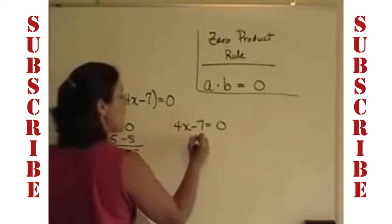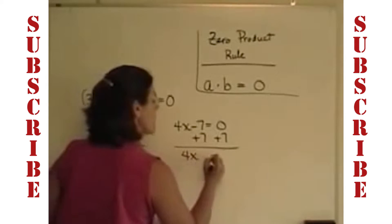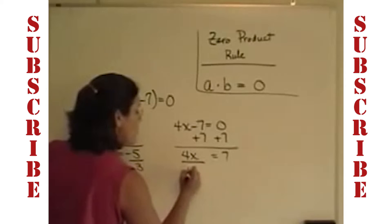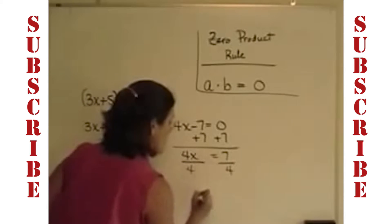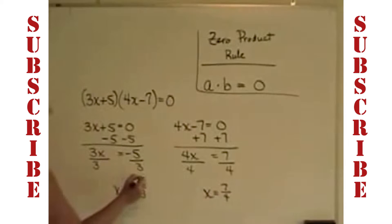The other one over here, when we add 7 to both sides, we have 4x equals 7, and then divide both sides by 4 to get x alone. The other solution for x in this problem is 7 fourths.